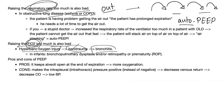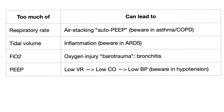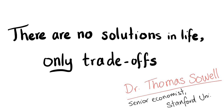Pros and cons of PEEP: Pro — it keeps alveoli open at end of expiration, improving oxygenation. Con — it makes intrapleural pressure positive instead of negative, which decreases venous return, decreases cardiac output, and decreases blood pressure. This can also cause ankle edema from blood pooling. Too much of anything is bad: too much respiratory rate → auto-PEEP (beware in asthma/COPD); too much tidal volume → alveolar inflammation (beware in ARDS); too much FiO2 → oxygen injury; too much PEEP → decreased venous return, decreased cardiac output, hypotension.